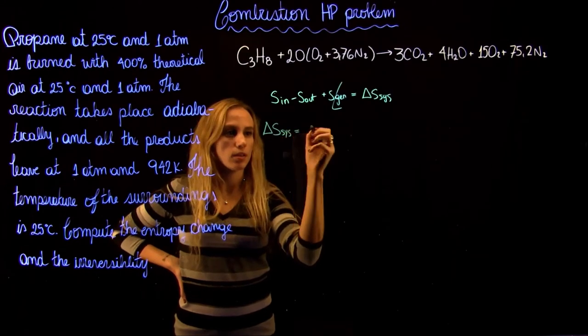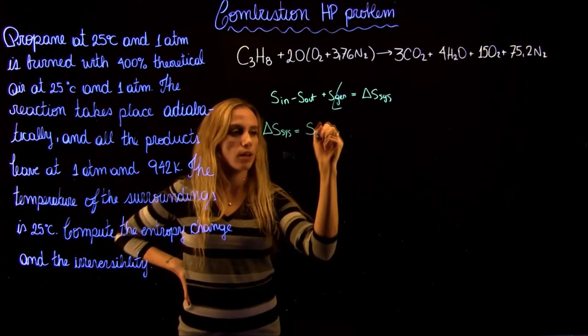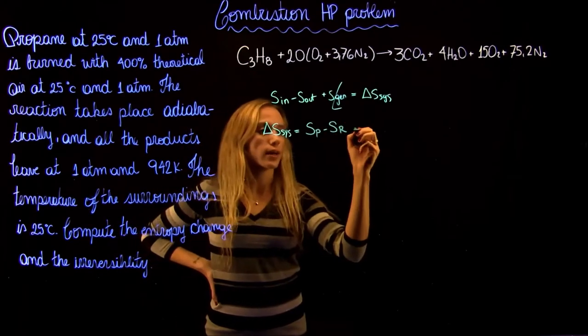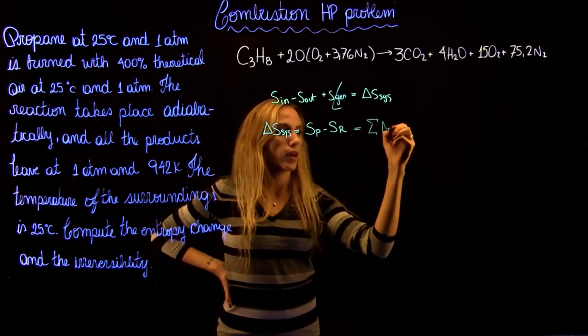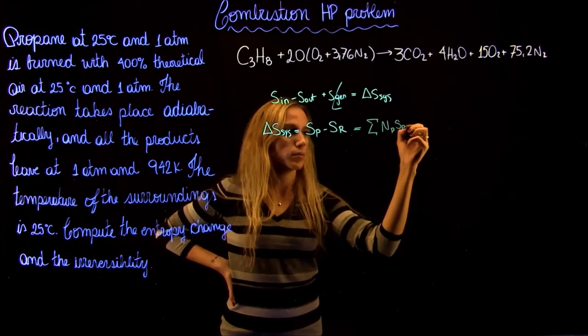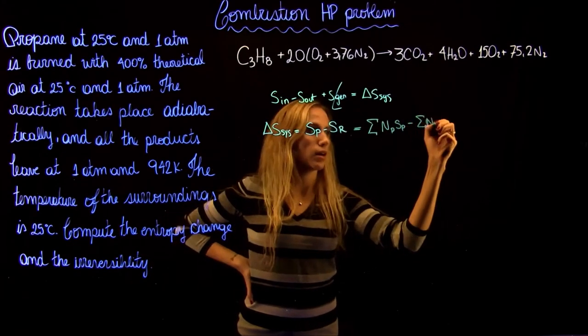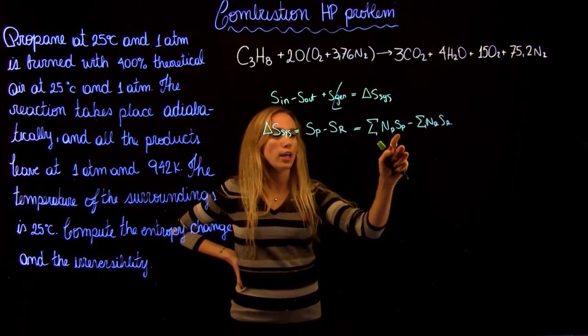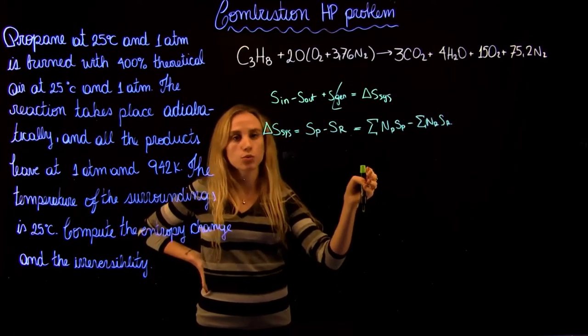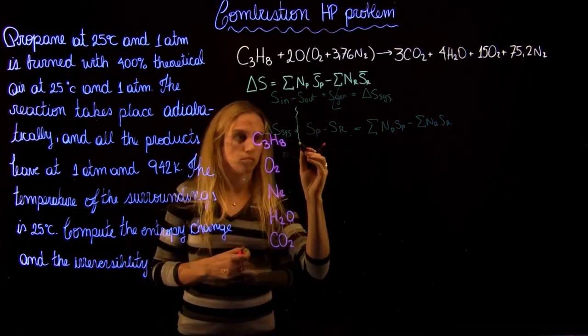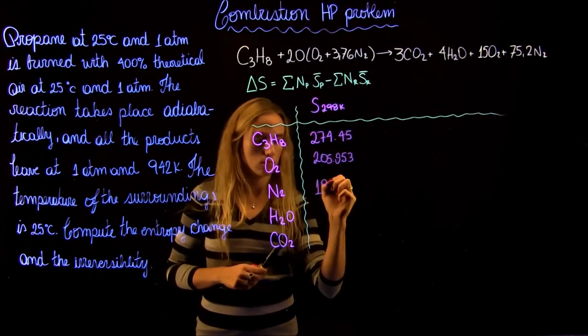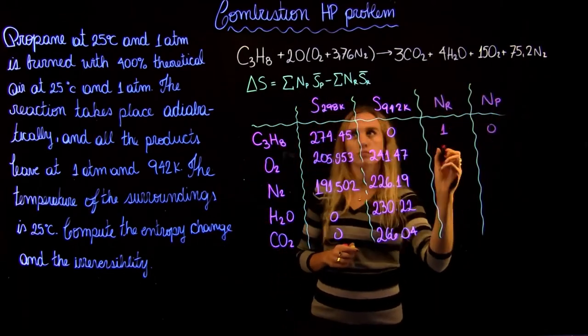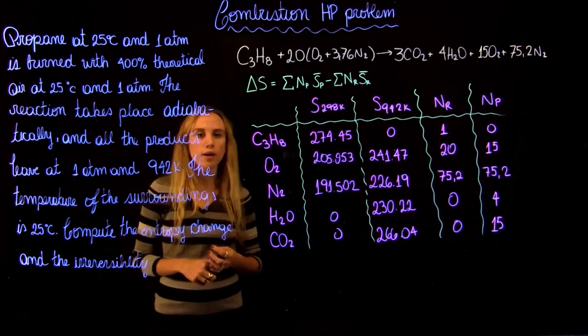So we can rewrite this equation as the entropy of the system equals to the entropy of the product minus the entropy of the reactant. And we can rewrite this as the sum of NP SP minus N of the reactant and R of the reactant. In order to find the entropy for all of the components, we need to go back to the tables and find the values.